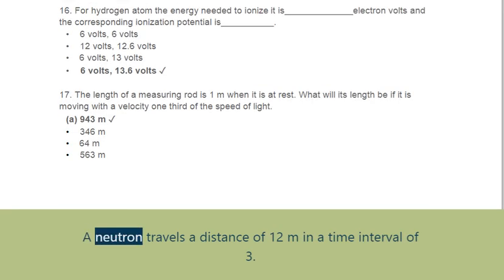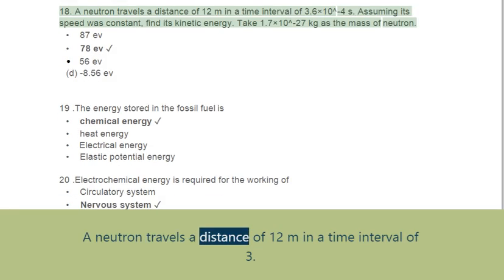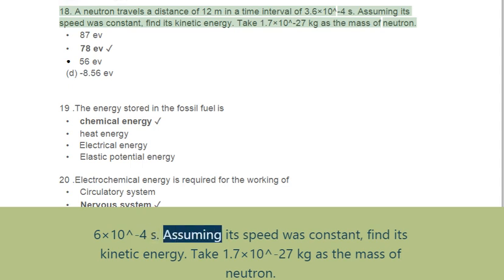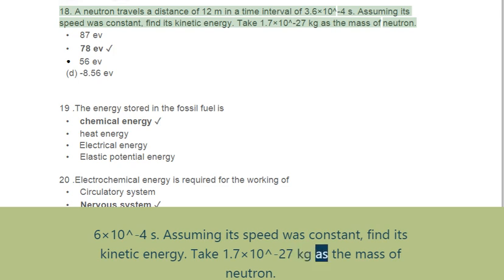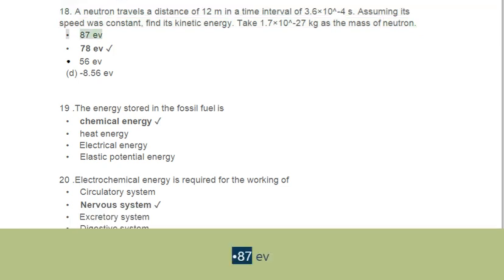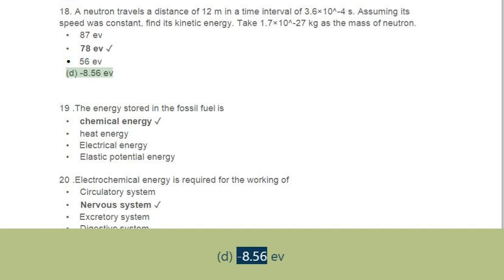Question 18: A neutron travels a distance of 12 meters in a time interval of 3.6×10⁻⁴ seconds. Assuming its speed was constant, find its kinetic energy. Take 1.7×10⁻²⁷ kg as the mass of the neutron. Options: A. 8.7 fJ, B. 7.8 fJ, C. 5.6 fJ, D. -8.56 fJ.